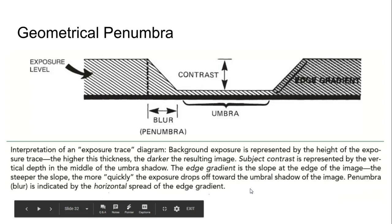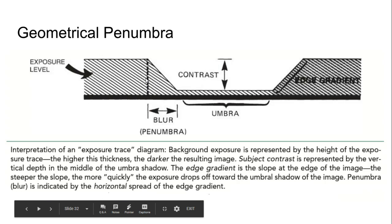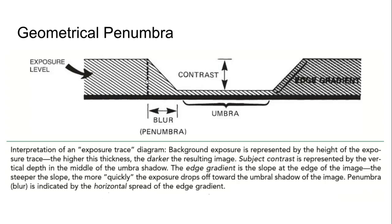So if you take a look at this, right, the background exposure is represented by the height of the exposure trace diagram. So that's this height here represents our exposure. Contrast is represented by the vertical depth over here. The edge gradient is the slope on the right, but what we're going to be paying attention to most is the slope of this line right here, which is going to determine our blur or penumbra, in which case is going to determine whether our image is essentially getting more or less blurry. In other words, spatial resolution going up or down.